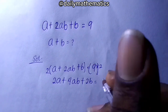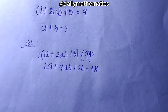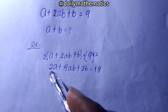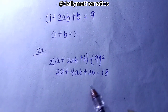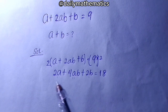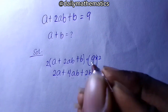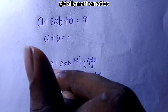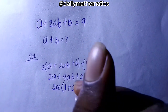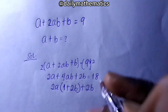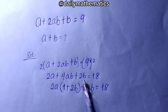9 times 2 is 18. So now we can consider factorization. You can see 2a is common in two terms, and 2b is common in two terms. So now I want to factorize 2a out. When I bring out 2a, it gives me 1, plus when I bring 2a out from the middle term it remains 2b, plus 2b equals 18.